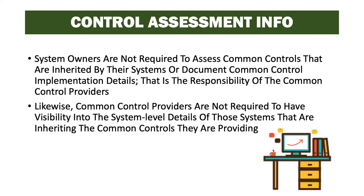Common control providers are not required to have visibility into the system level details of those systems inheriting the controls they provide. The common control provider doesn't need to know the details of where their common controls are being implemented in specific systems, but they do need a high-level understanding of where their controls are being implemented. This is important so that if there's a change in the status of the common controls, the common control providers can notify the system owners inheriting that control of the change.